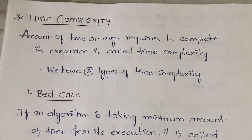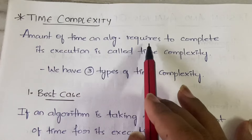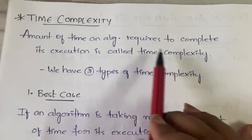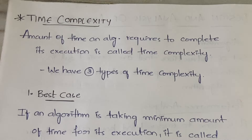The definition you already know: the amount of time an algorithm takes in order to complete its execution is called time complexity — whether it is taking five minutes or ten minutes. But in terms of algorithms, we do not measure time in minutes; we measure it in the order of n or n squared. I'll explain with examples.